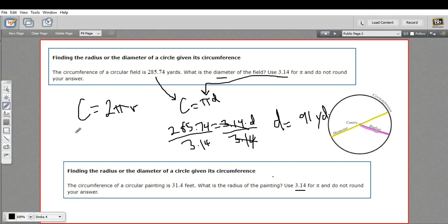Since we're looking for radius, the circumference is 31.4, so I'll put that in for circumference. And then we've got our 2 and our π. They're telling us to use 3.14, and radius is what we're solving for.